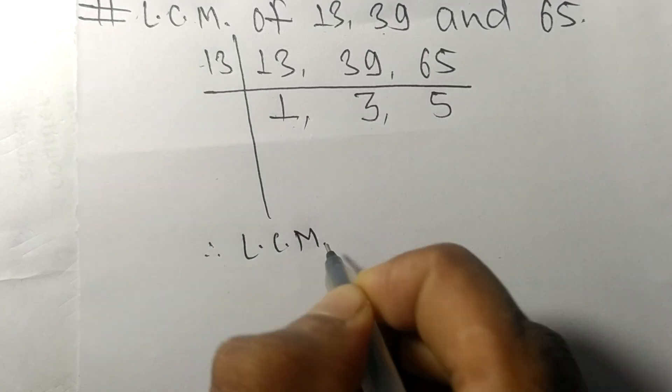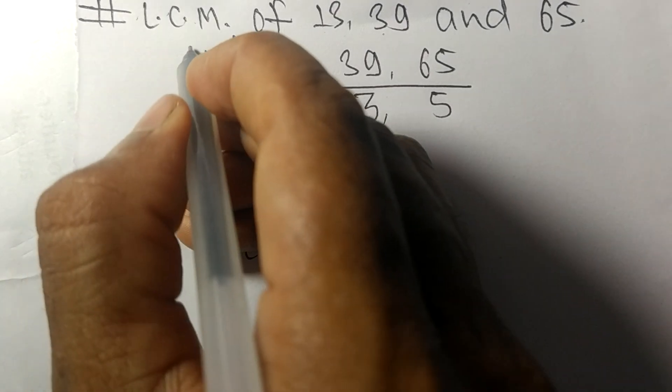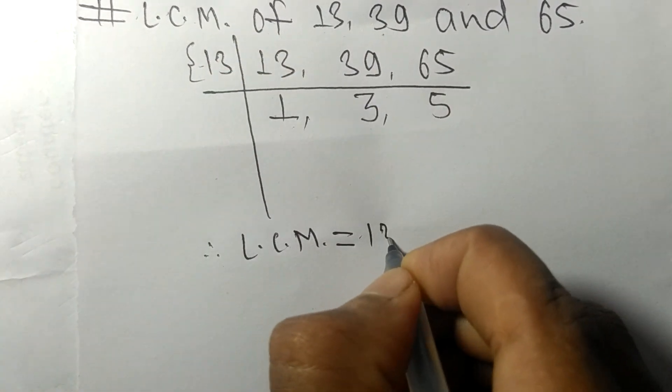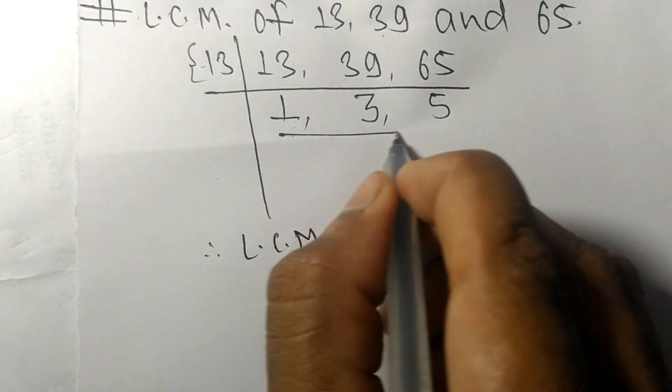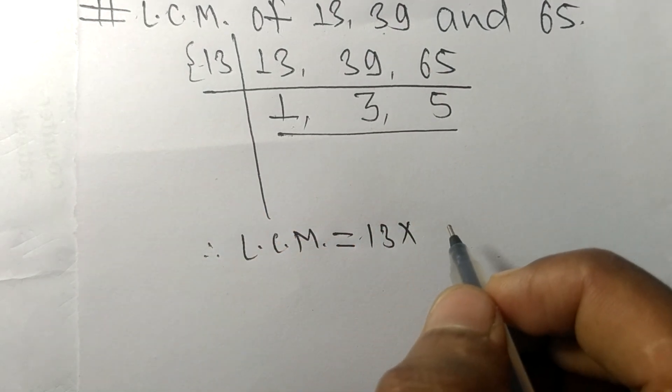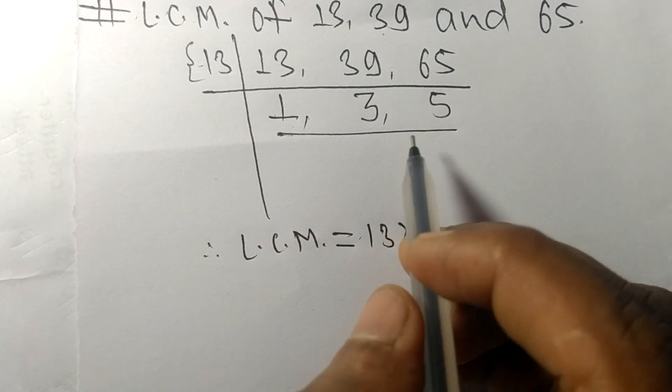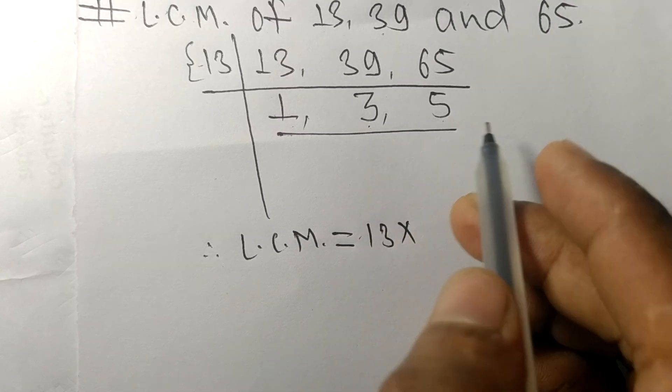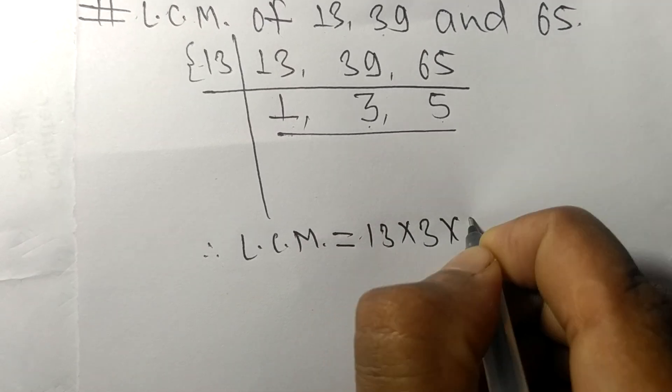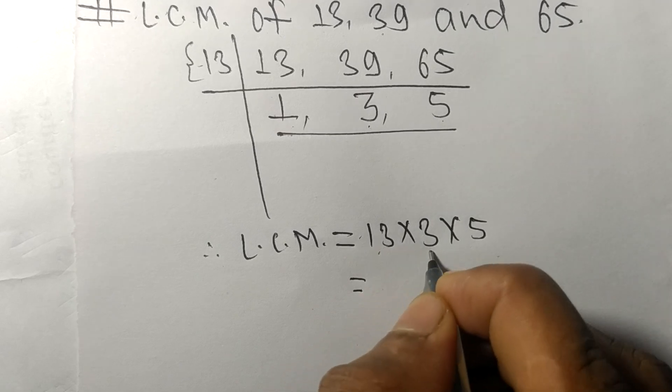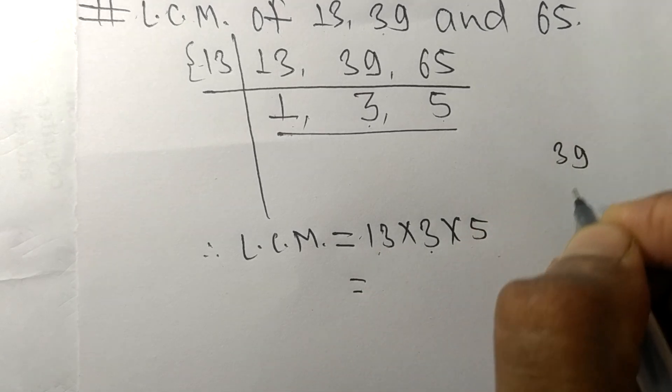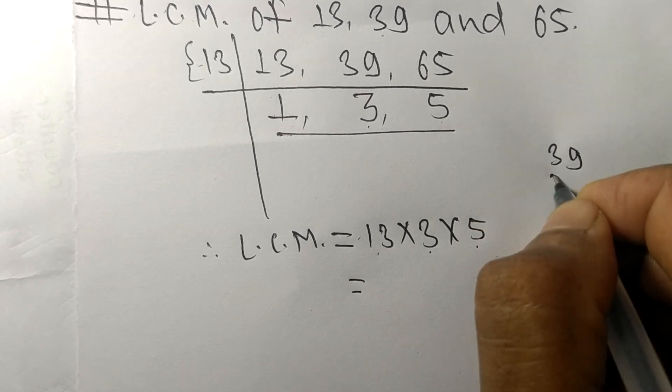Therefore, the LCM is equal to 13 from this side. From this side we choose the numbers greater than 1, that is 3 and 5. So 3 and 5: 13 times 3 equals 39, and multiplied by this 5.